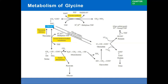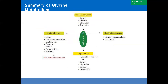Excessive production of oxalate forms insoluble calcium oxalate salts, which may lead to renal stones. Important biomolecules produced from glycine include heme, creatine, creatinine, glutathione, purine, serine, and one-carbon metabolism intermediates.